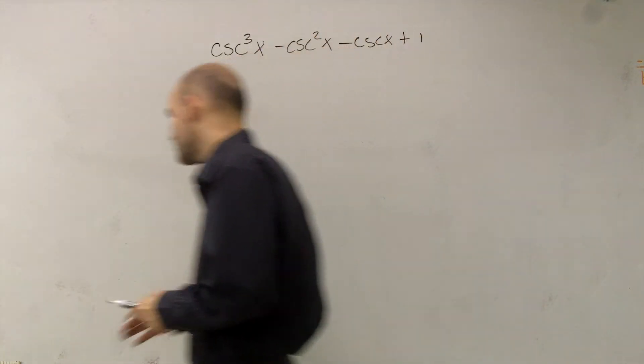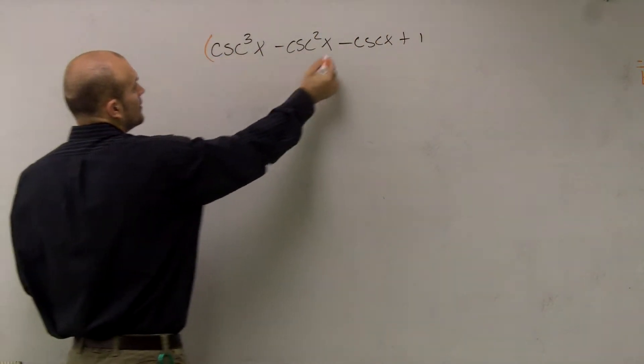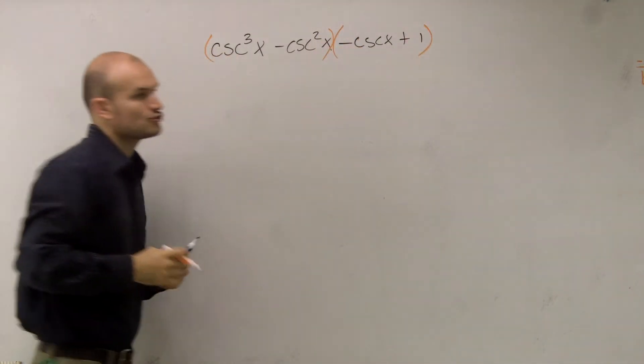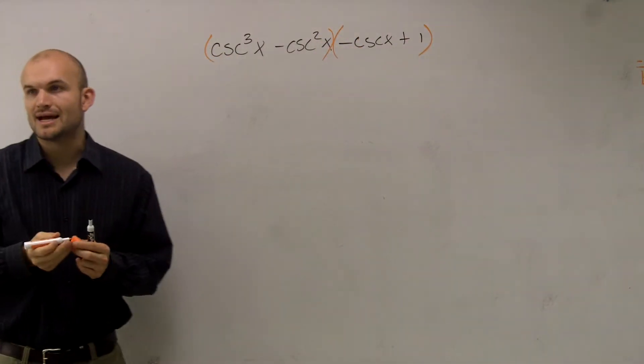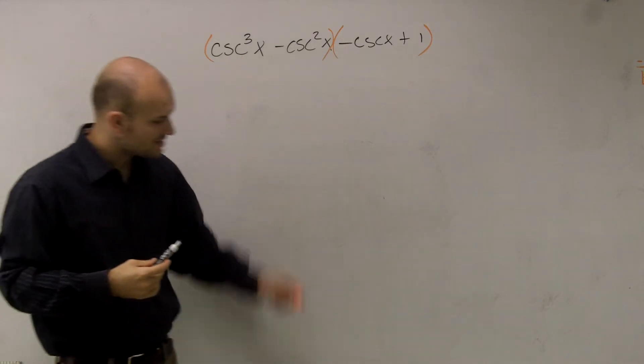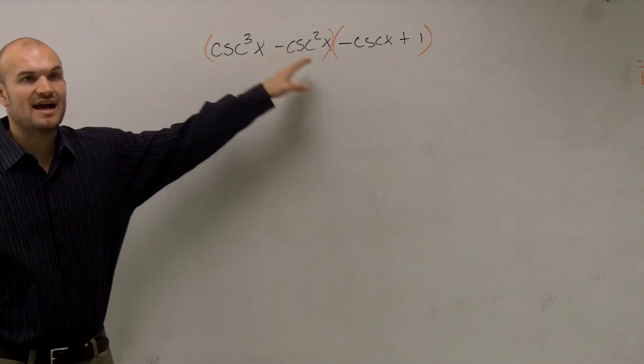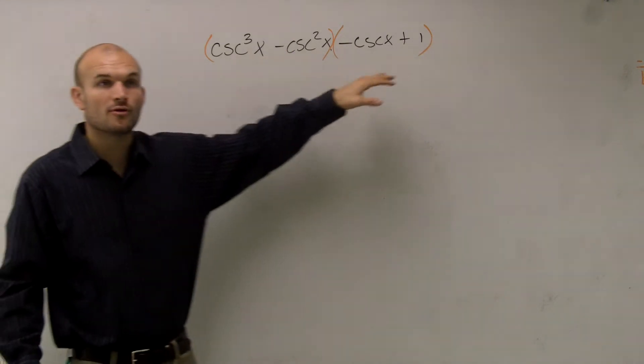So when using factoring by grouping, remember what we're going to want to do is group together the first two terms and the last two terms. Sometimes you have to manipulate them, but usually we're just group these two terms. And then what I do is factor out the greatest common factor for both of those terms.